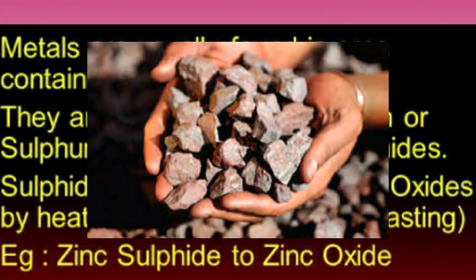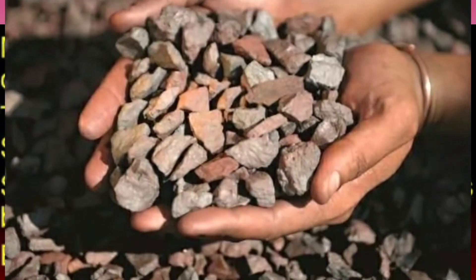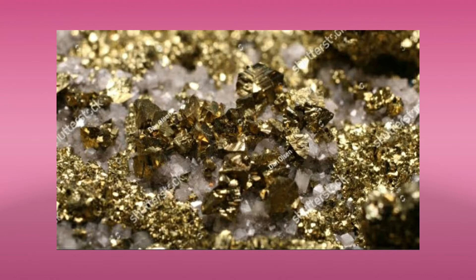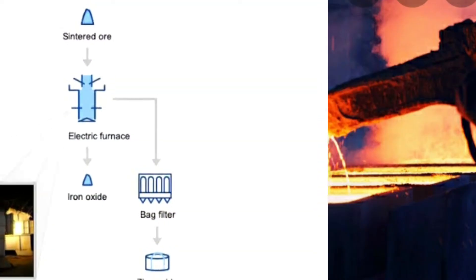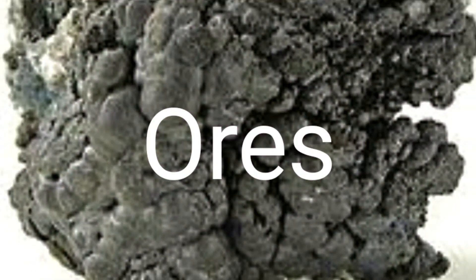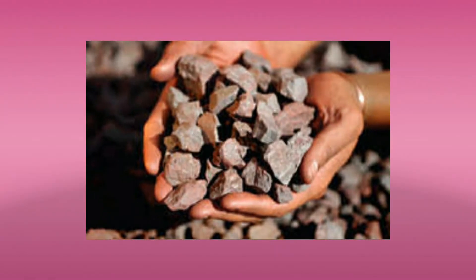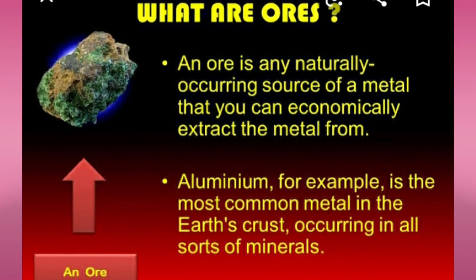Metals are usually found in ores containing minerals, combined with oxygen or sulfur to form oxides or sulfides. Sulfide ores are converted into oxides by heating them in air — a process called roasting. For example, zinc sulfide is converted to zinc oxide. Metals occur in rocks referred to as ores.